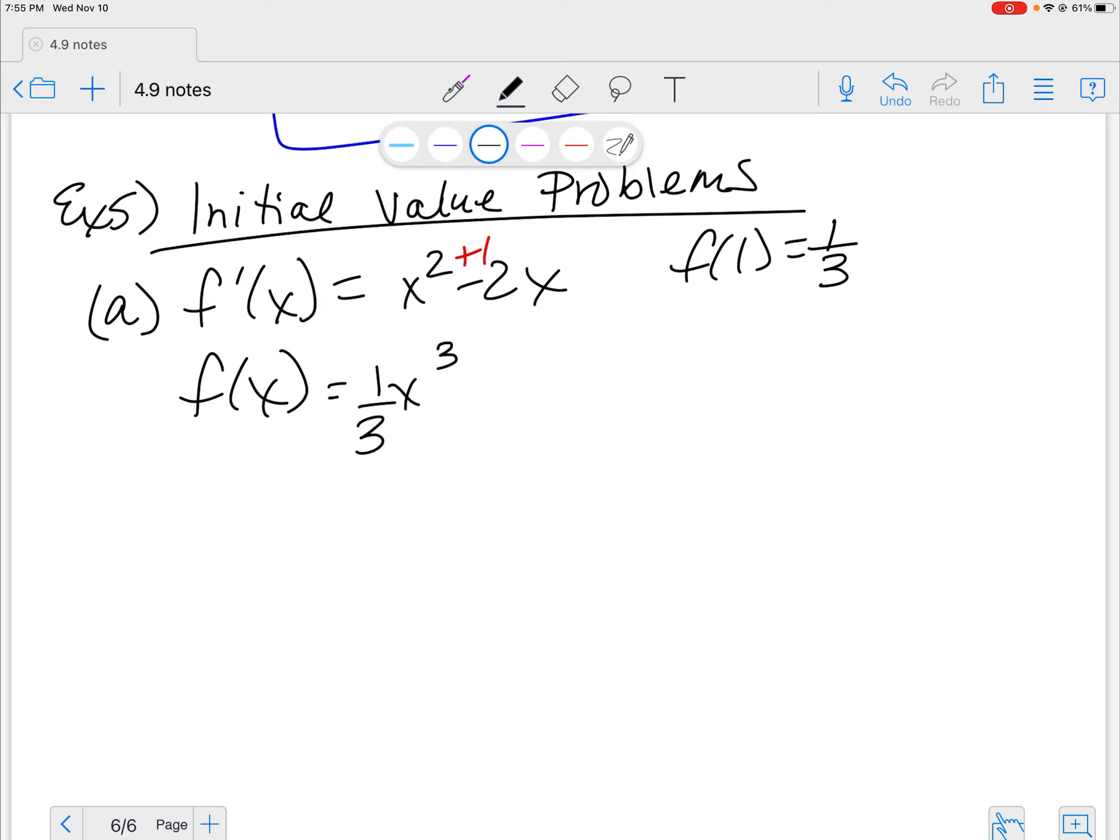So that gets me an x cubed. I forgot my equal sign. Then bring that 3 down below, so it's 1/3. And then again I'm going to add 1 to this, it's like 1 plus 1 there. So I've got minus 2 and I've got x squared, bring that down in front. And then plus C.